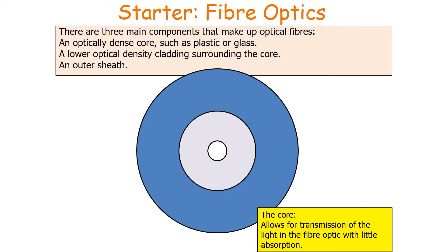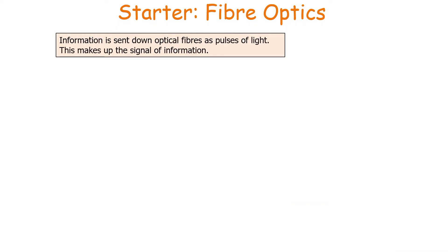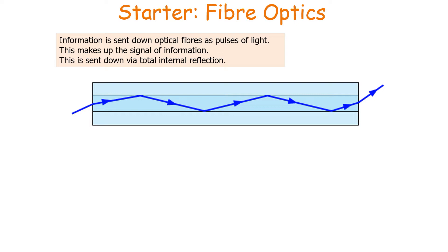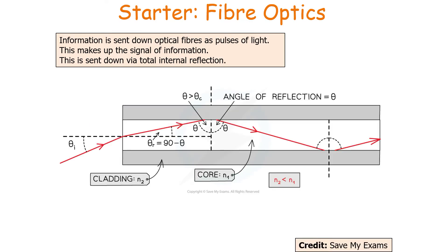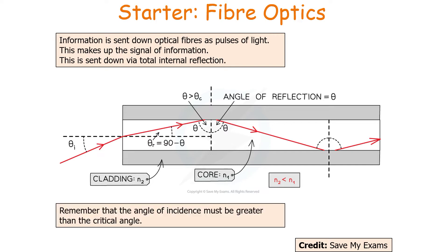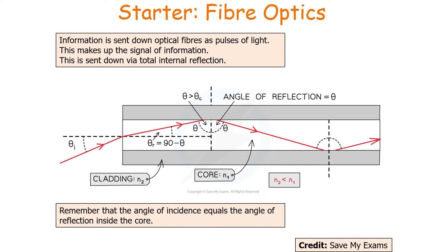The core allows for the transmission of light in the fibre optic with very little absorption. Information is sent down optical fibres as pulses of light, making up the signal, and this is sent via total internal reflection. As light enters the core it refracts, then carries out total internal reflection through the core without transmitting through the cladding, travelling to the other end. For total internal reflection to occur, the angle of incidence must be greater than the critical angle, and the refractive index of the cladding must be lower than that of the core. Because reflection is taking place, the angle of incidence equals the angle of reflection inside the core.